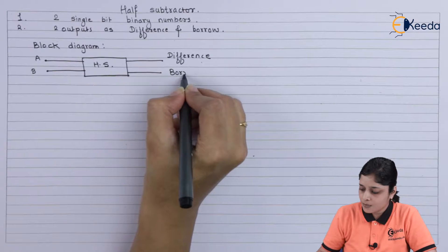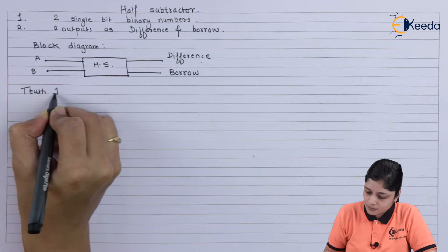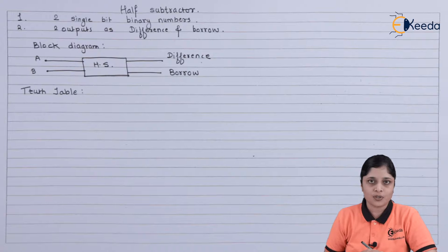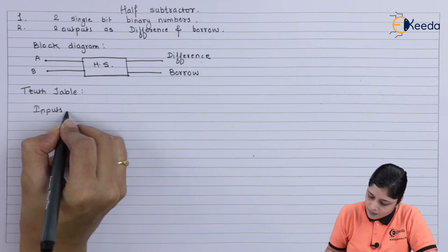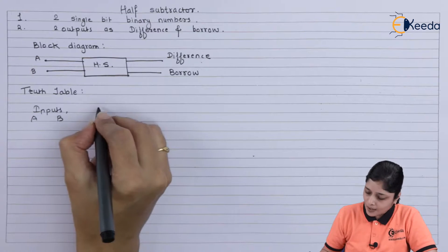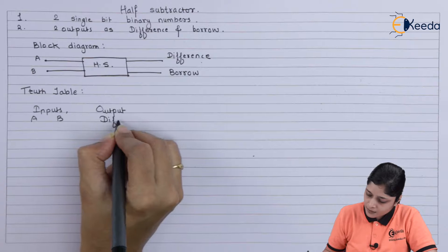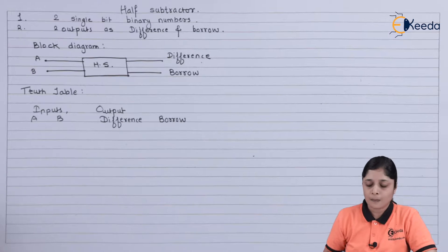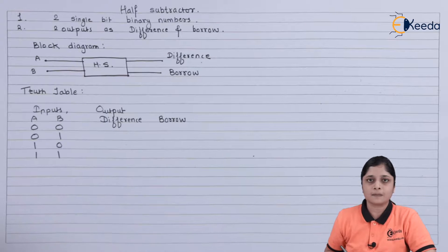Now the truth table comes. For the truth table, you have to focus on the number of inputs. Here two inputs are there, so you will write A and B, and the two outputs are difference and borrow. Two inputs means four combinations: 0-0, 0-1, 1-0, and 1-1.